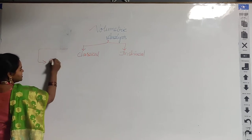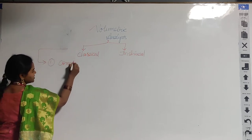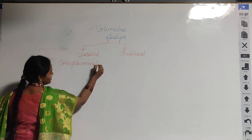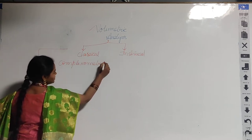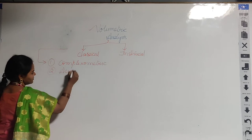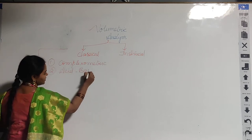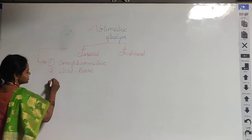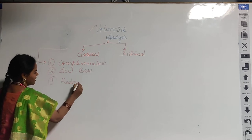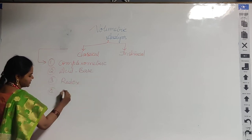There are four kinds I want to discuss today: complexometric titrations, acid-base titrations, redox titrations, and precipitation titrations.